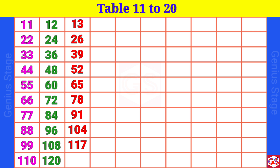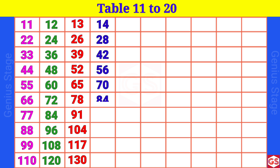13 10s are 130. 14 1s are 14, 14 2s are 28, 14 3s are 42, 14 4s are 56, 14 5s are 70, 14 6s are 84, 14 7s are 98, 14 8s are 112, 14 9s are 126.